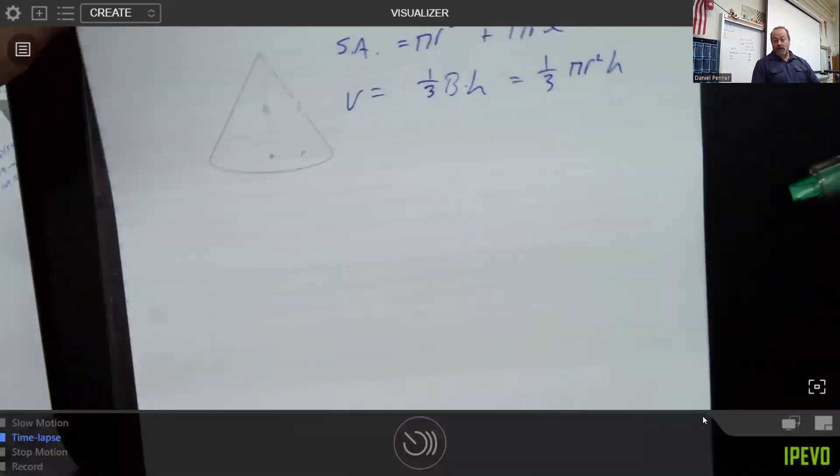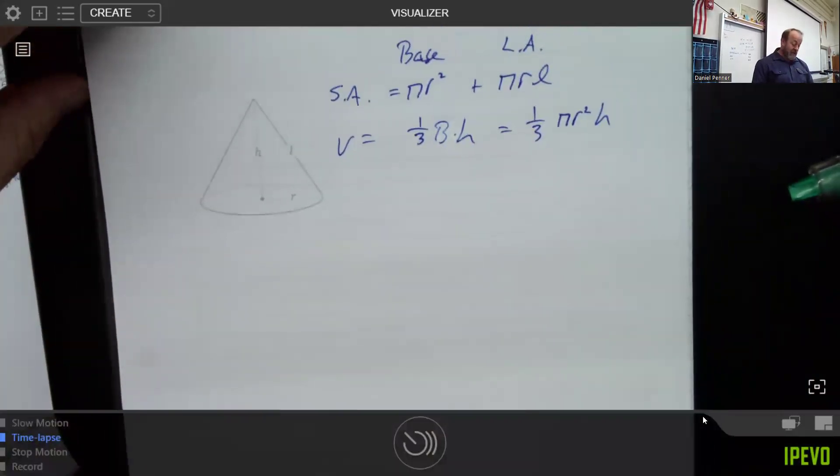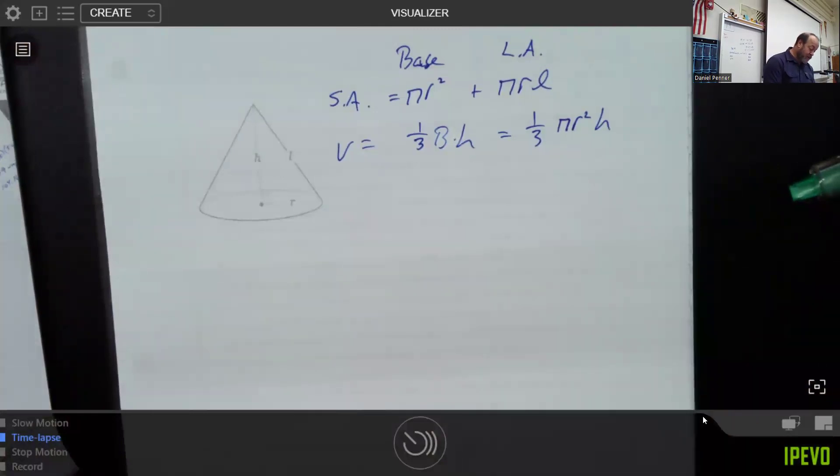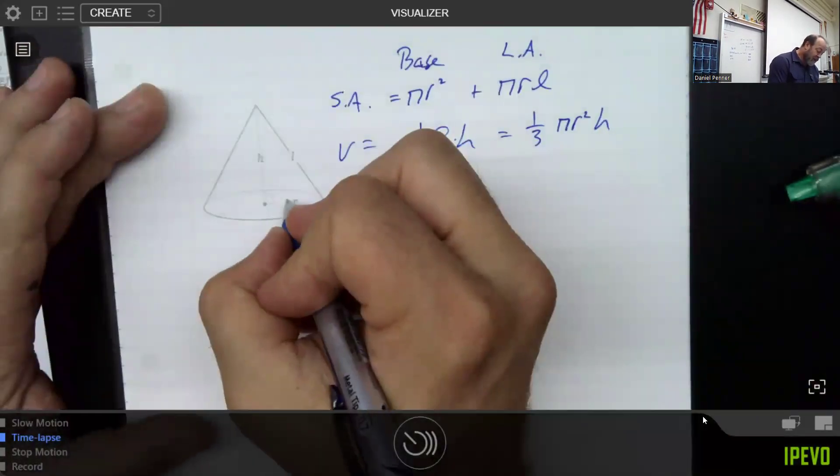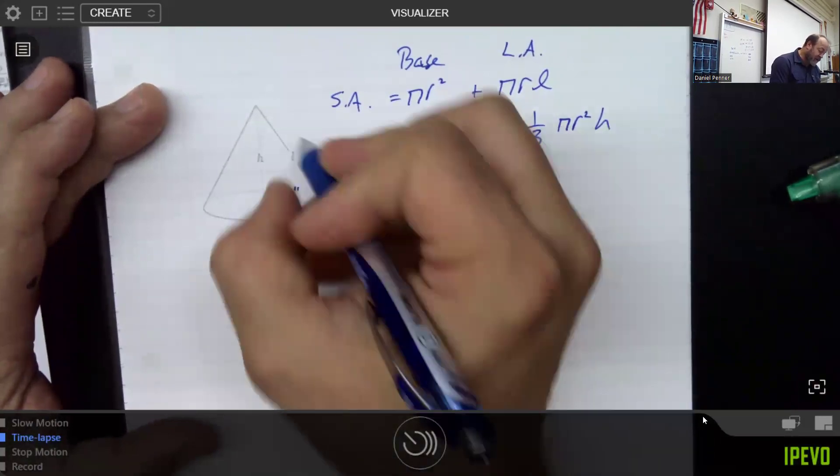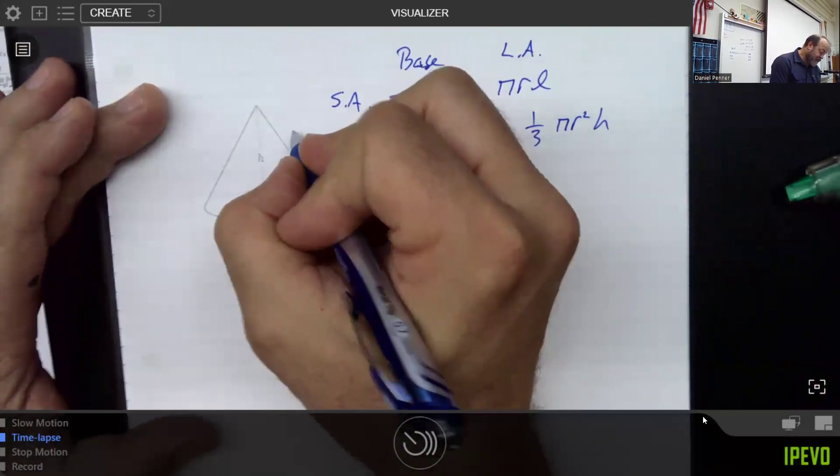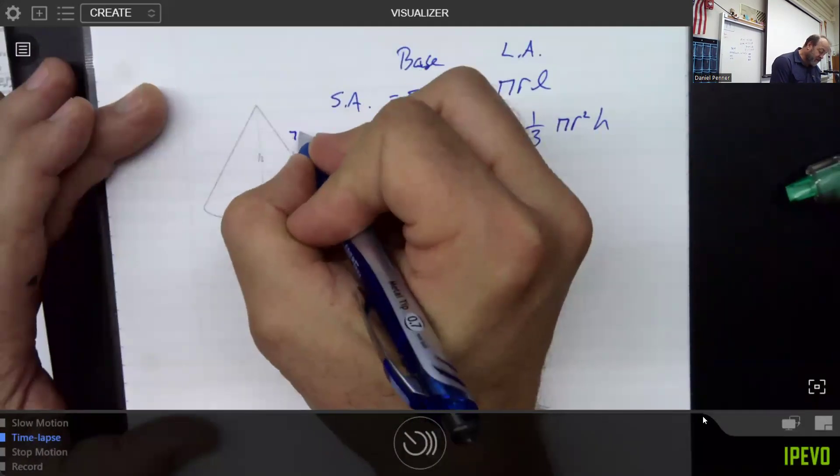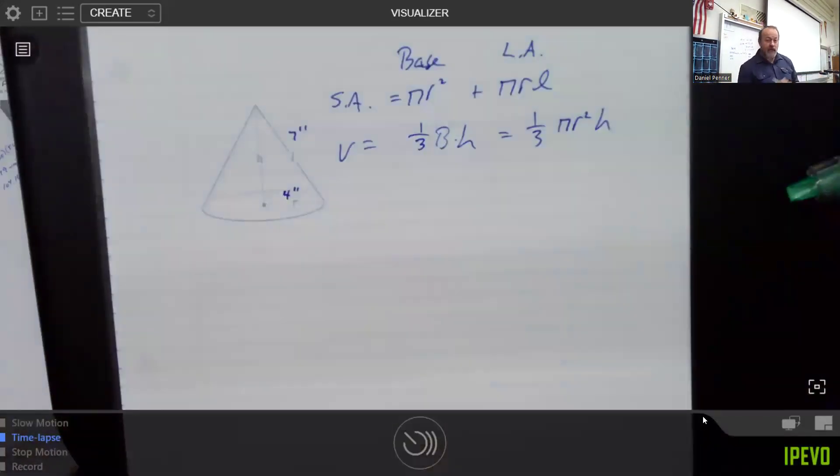So you always have to have a couple of pieces of data that is there. So let's suppose that I told you this piece right here was, let's say four inches. And let's say the slant height was something like seven inches. Not that it really matters that much.